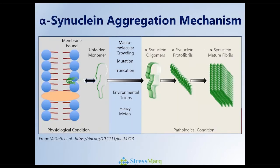The process by which alpha-synuclein aggregates is shown here in this slide. Alpha-synuclein monomers, shown in green on the left, interact with membranes, which then results in a change in structure. This is also related to macromolecular crowding, any mutations that may be present such as the familial A53T mutant, truncation in terms of C-terminal truncation, as well as the environment. This goes on to form a pool of alpha-synuclein oligomers, which can be different in size, morphology, and characteristics.